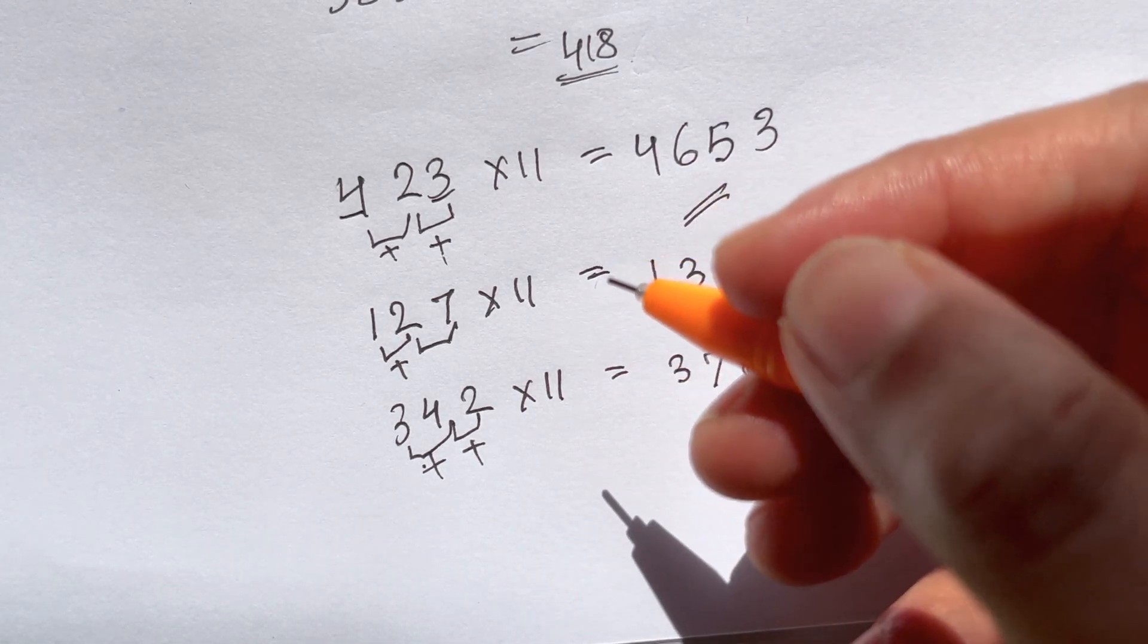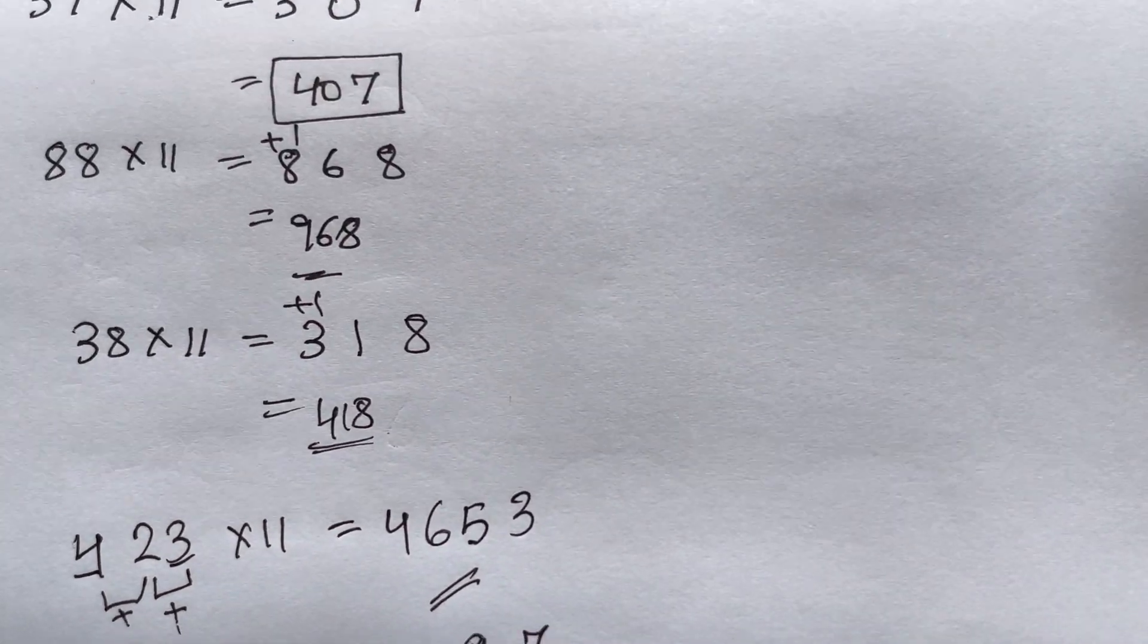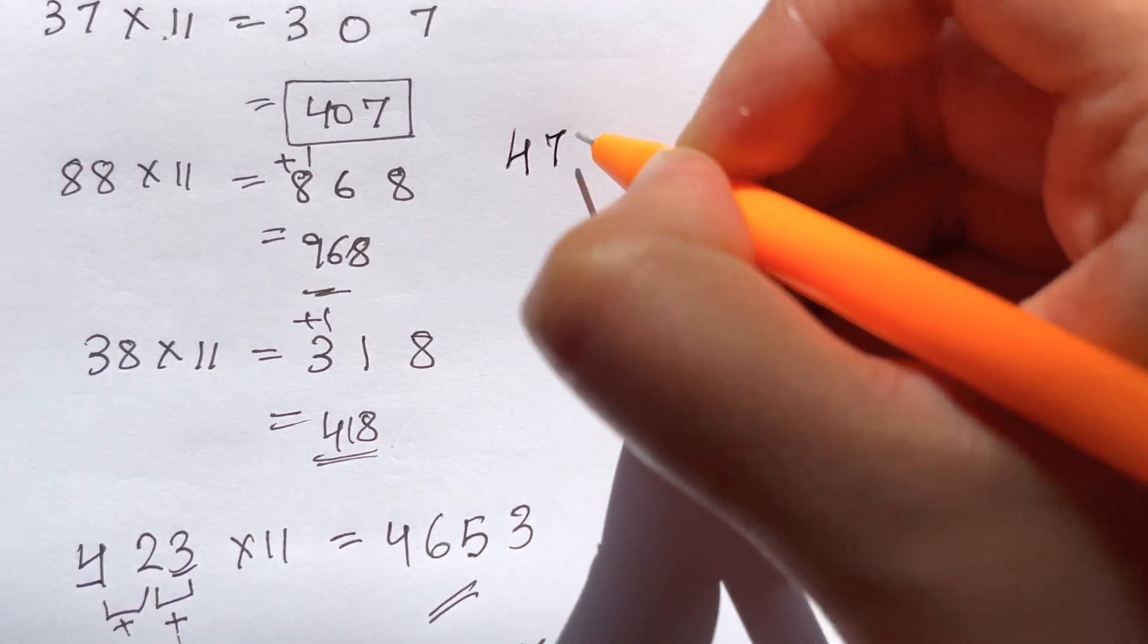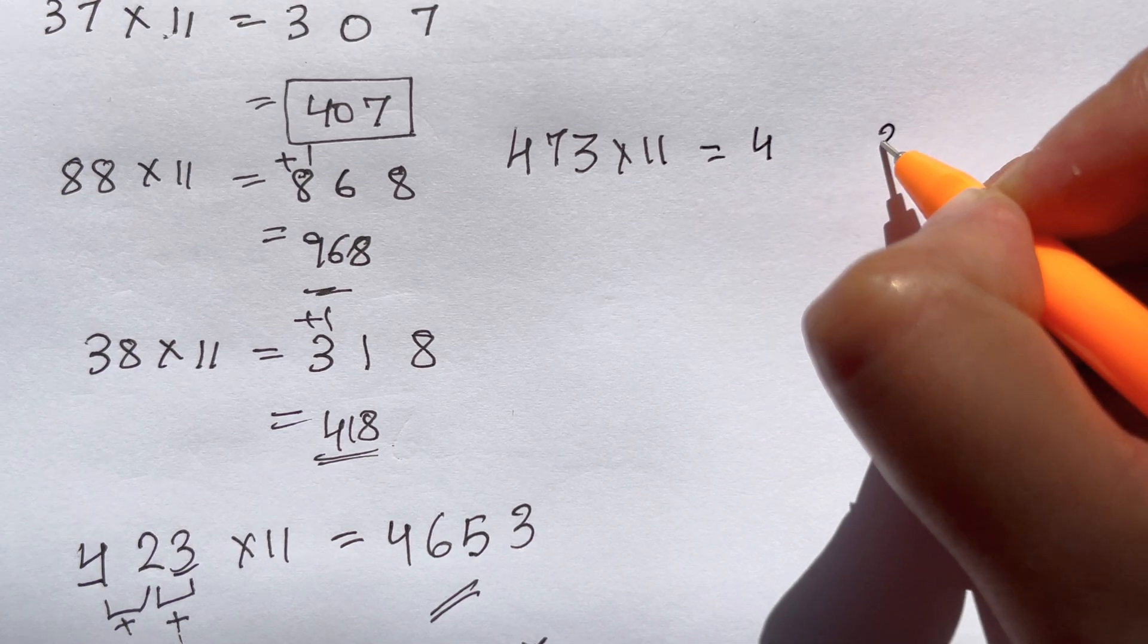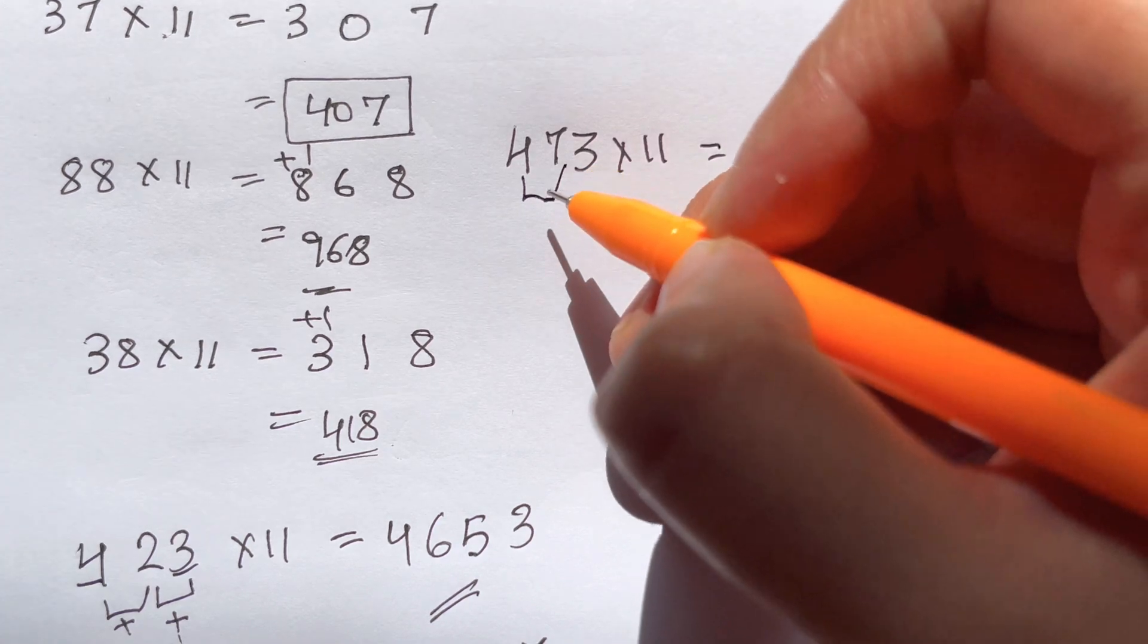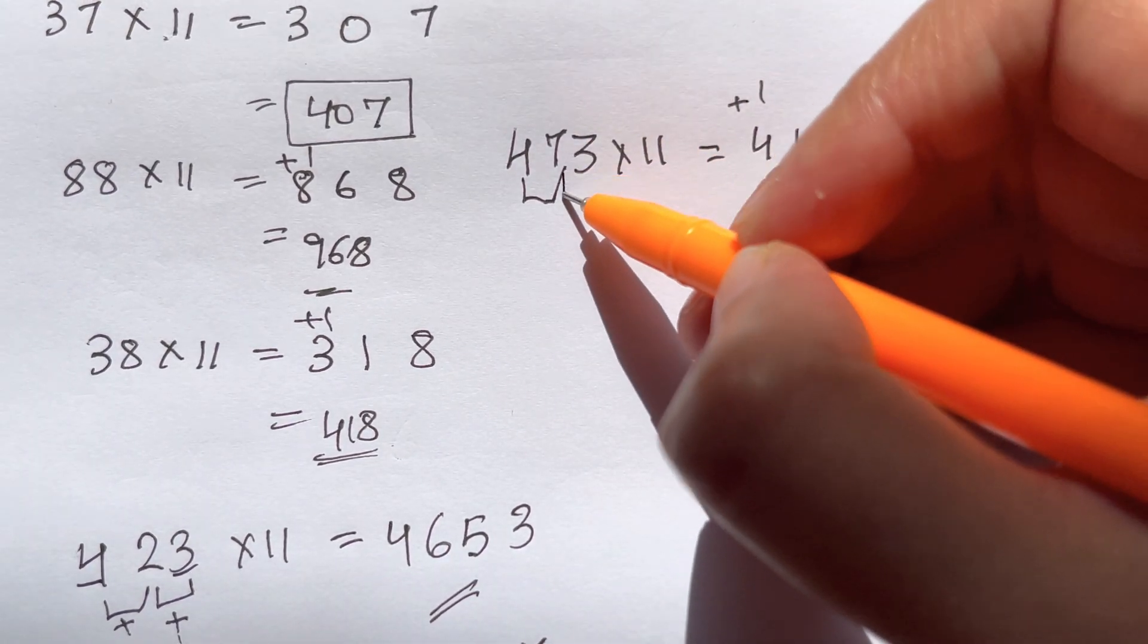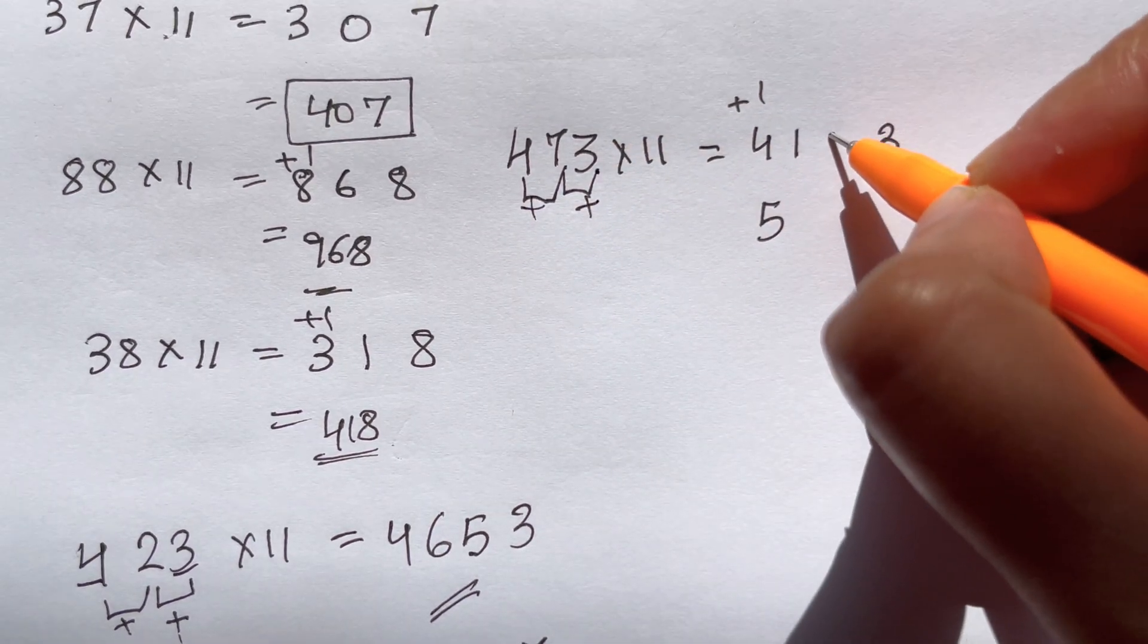So when you have a carry over, suppose you have 473 times 11. What do you do? I'll just write down 4 and a 3. Now I'll start adding up. 4 plus 7 gives me 11, so I'll just write down 1 and a 1 carry over goes here so that becomes 5. Now 7 plus 3 is 10, so I'll have a 0 and a carry over here so that becomes 2. So my answer is 5203.